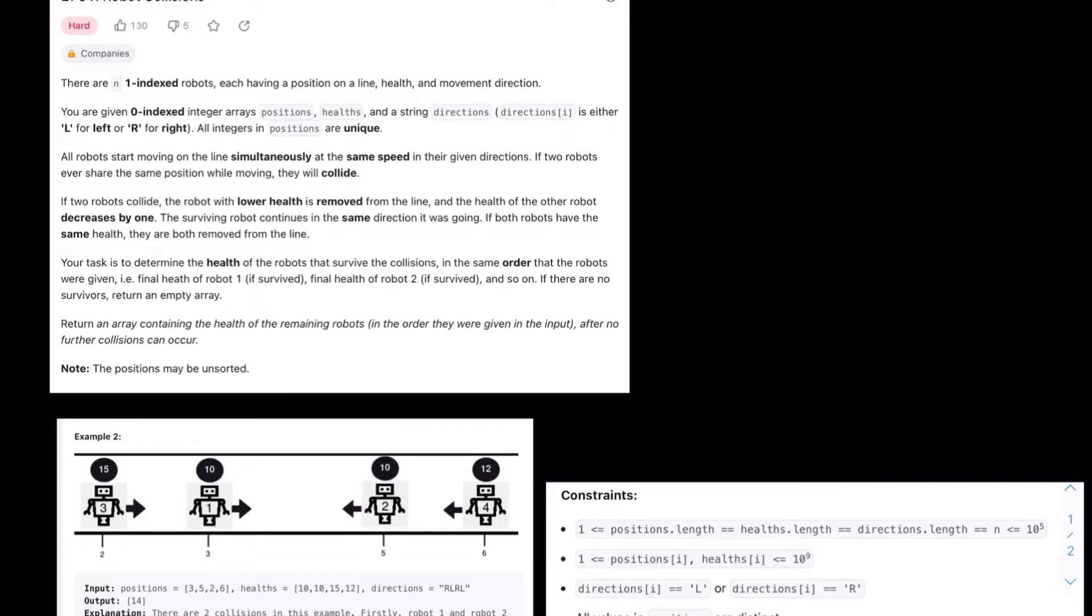Quick explanation of problem 2,751 robot collisions. There are n one-indexed robots, each having a position on a line, health, and movement direction. You're given zero-indexed integer arrays positions, health, and a string directions that all represent their respective things.